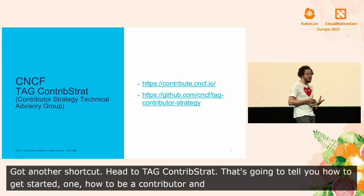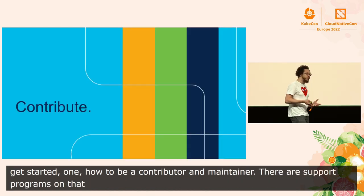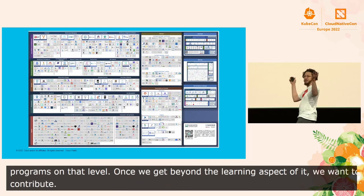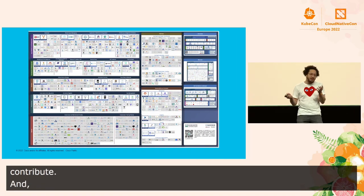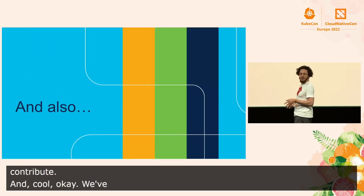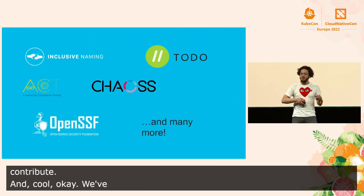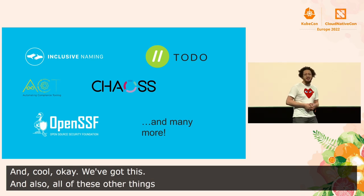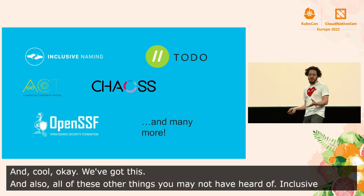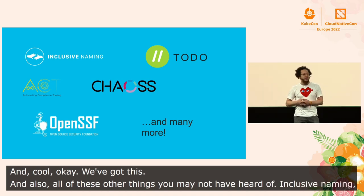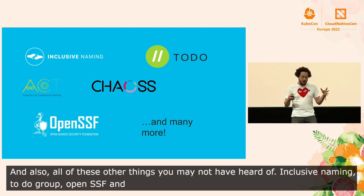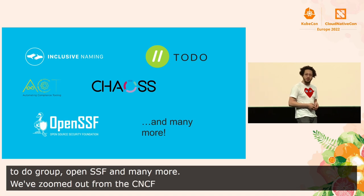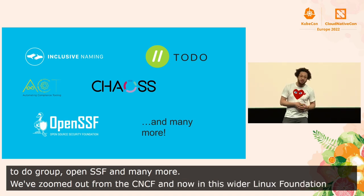But once we get beyond the learning aspect of it, we want to contribute. And there are also all of these other things you may not have heard of: Inclusive Naming, TO-DO Group, ACT, Chaos, OpenSSF, and many more. So now we've kind of zoomed out from the CNCF, and now we're in this wider Linux Foundation ecosystem. You'll see a lot of the same faces. Let's think about what can happen when we collaborate.